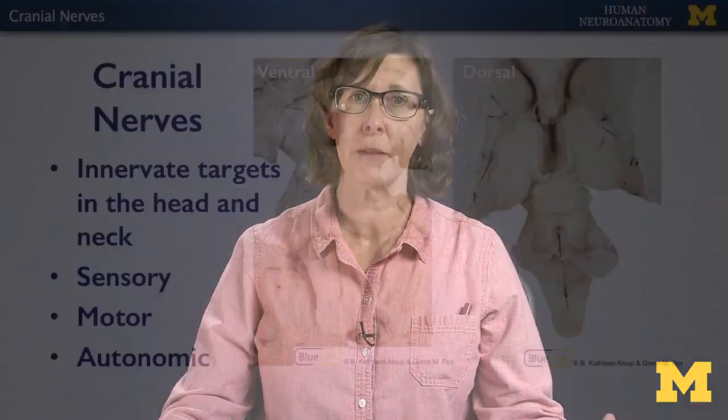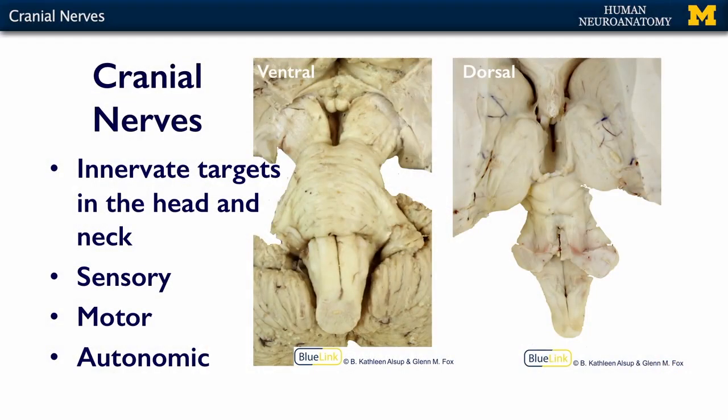The cranial nerves are similar to your segmental nerves in that they have multiple modalities and specific targets, but the cranial nerves are all going to innervate structures in your head and your neck. They are motor, sensory, and they carry autonomics. What's a little bit different about the cranial nerves is that they can be segregated in that they may only carry one modality and not multiple modalities.